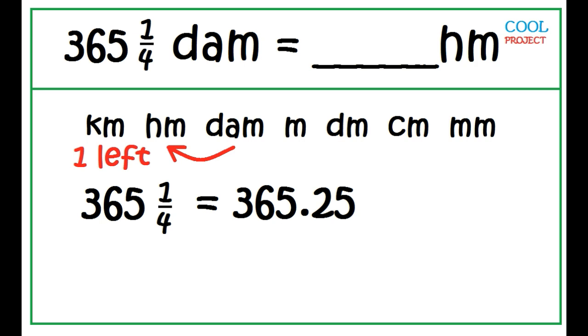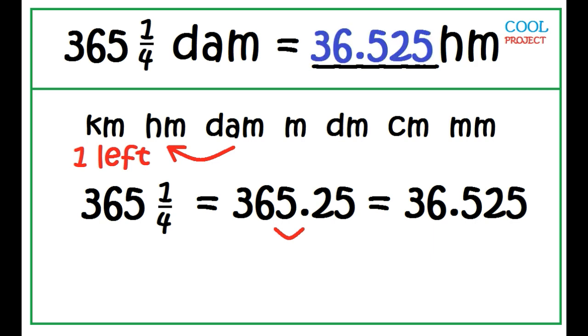Move the decimal point one unit to the left: 1. 365 and one-fourth decameters is equal to 36.525 hectometers.